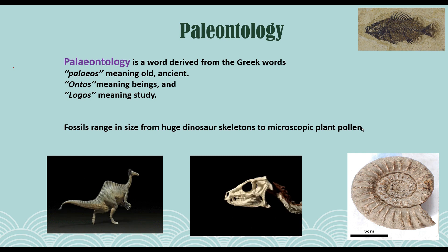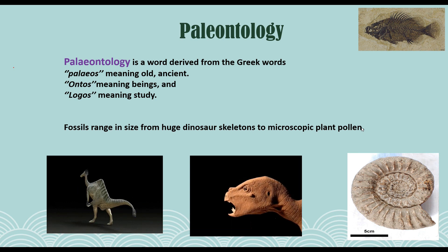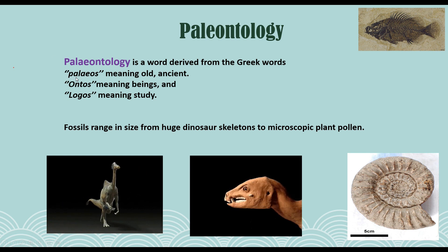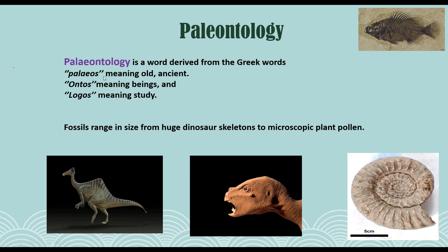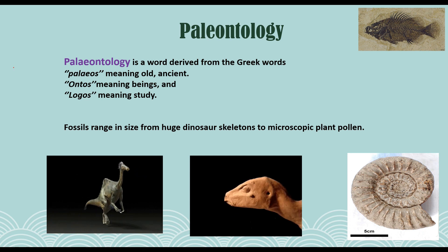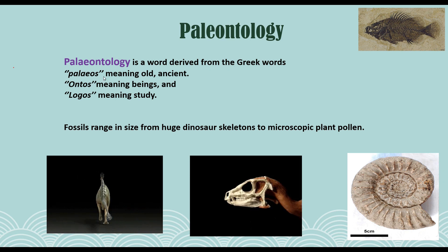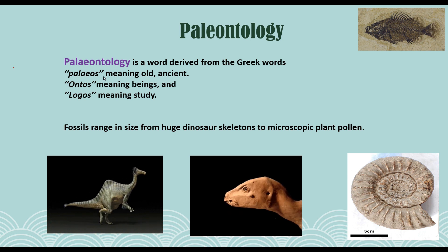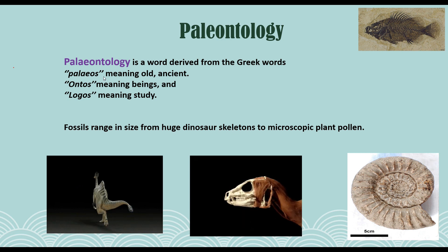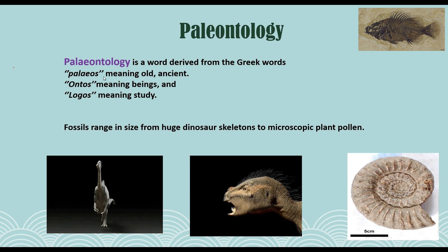Let's see what is paleontology. This word is actually a Greek word. If you split it, the first part is 'paleos', which means old, ancient, or prehistoric — anything talking about past life. The second part is 'ontos', which means beings or life forms — any organism, plants, or anything which has a kind of life.